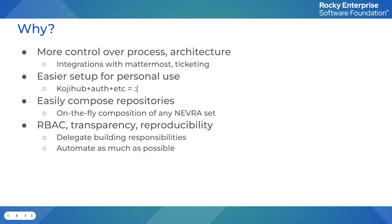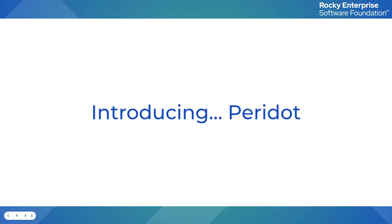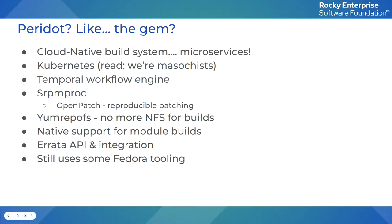Peridot is our attempt to make rebuilding Red Hat Enterprise Linux something that anyone can do — toward our goal of outlasting the people in the Rocky project. It is, in a full buzzword sentence, a cloud-native build system that you can run on a Kubernetes cluster. We use temporal.io for deterministic workflows to schedule all of the import, build, and create-repo jobs, and all the different sections of the modular system. This allows us to schedule those jobs across wherever they need to go, including external Kubernetes clusters for architectures like S390X and PowerPC.